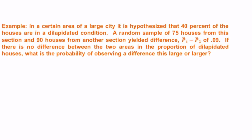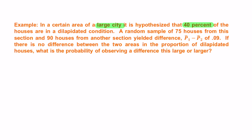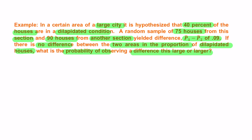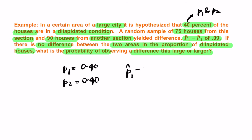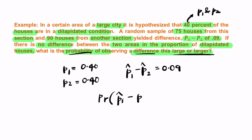In a certain area of a large city, it is hypothesized that 40 percent of houses are in dilapidated condition. A random sample of 75 houses from one section and 90 houses from another section yielded a difference p1-hat minus p2-hat of 0.09. If there is no difference between the two areas in proportion of dilapidated houses, what is the probability of observing a difference this large or larger? Note: p1 equals p2 equals 0.40, n1 equals 75, n2 equals 90, and we need P(p1-hat minus p2-hat ≥ 0.09).